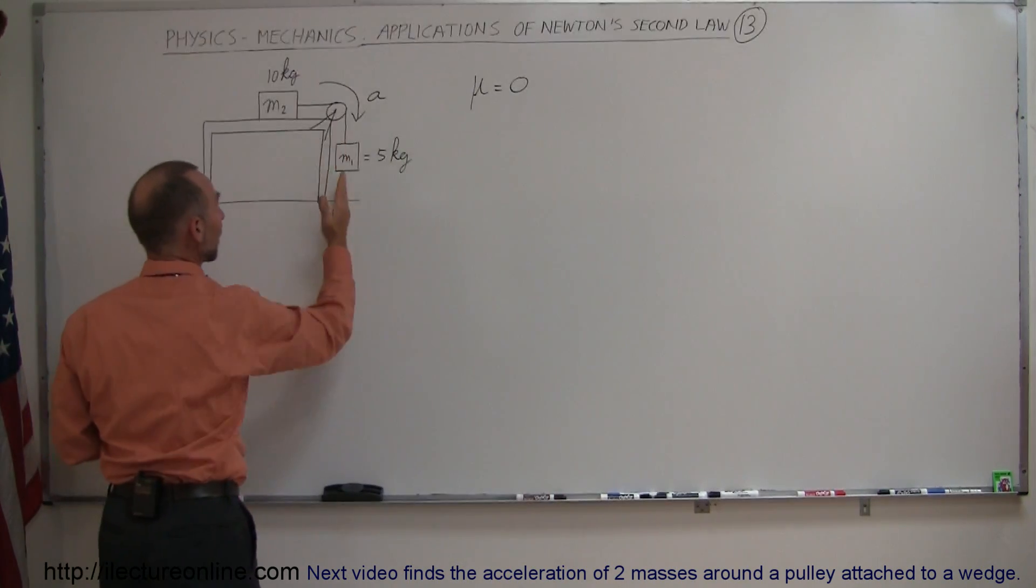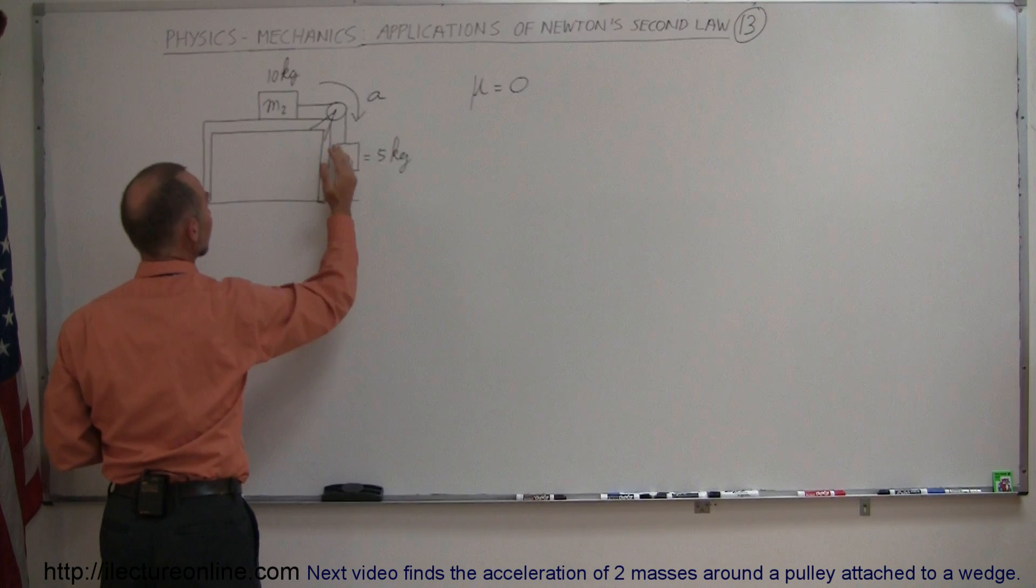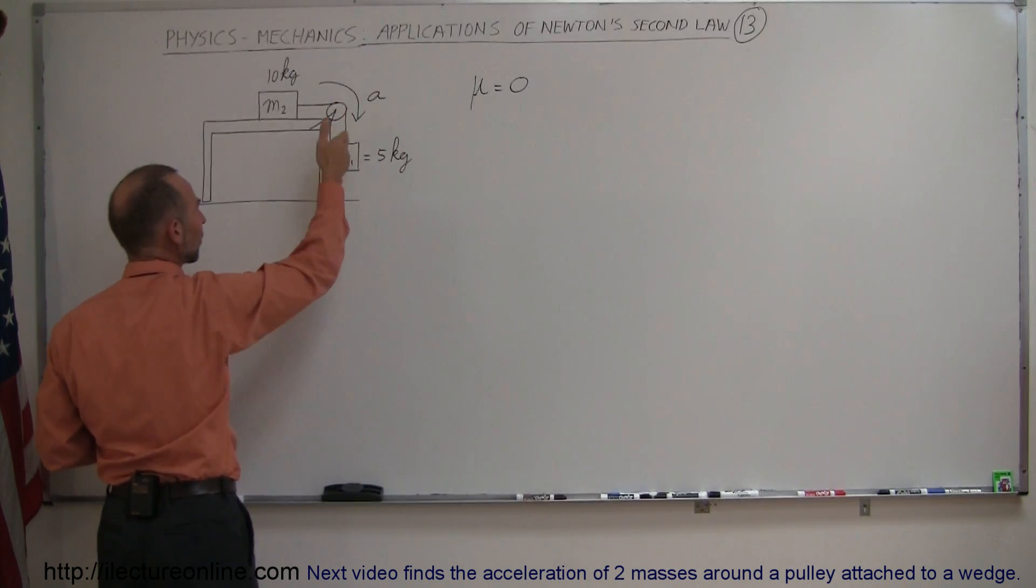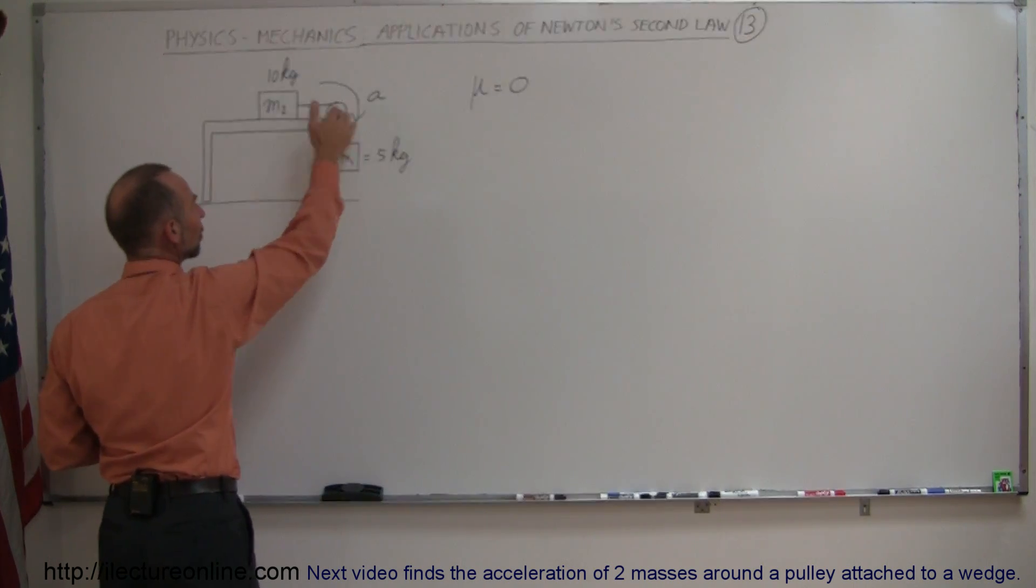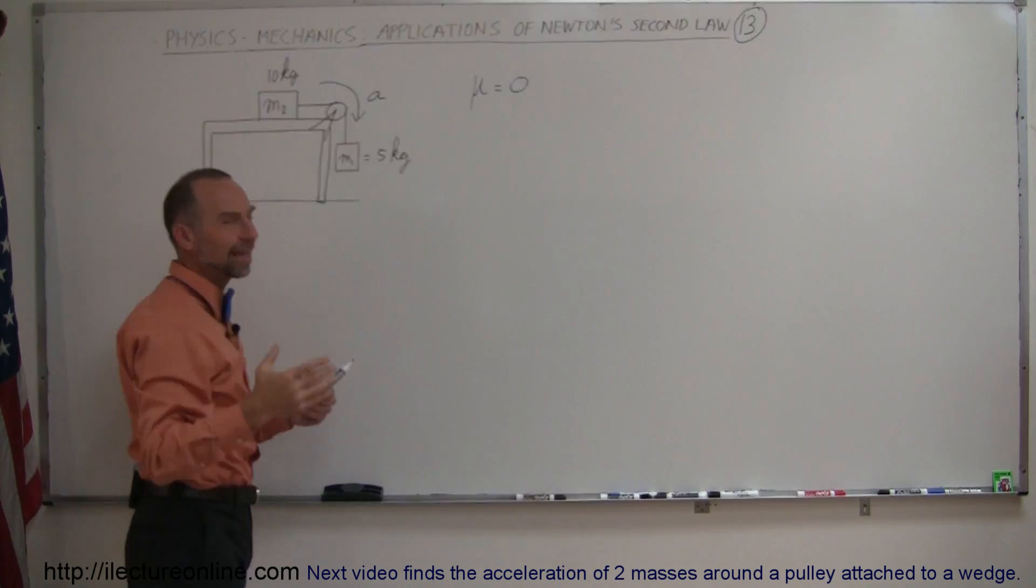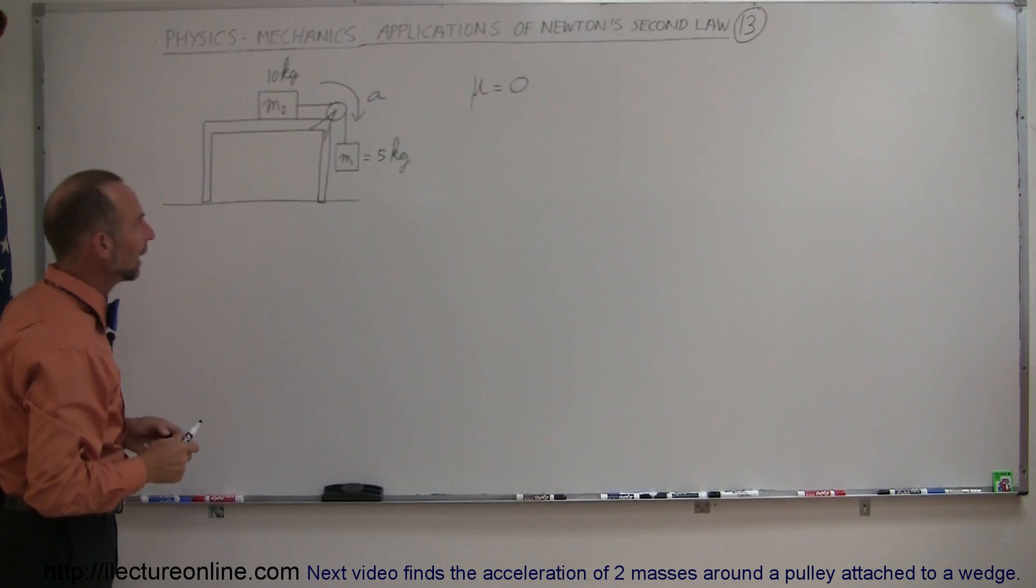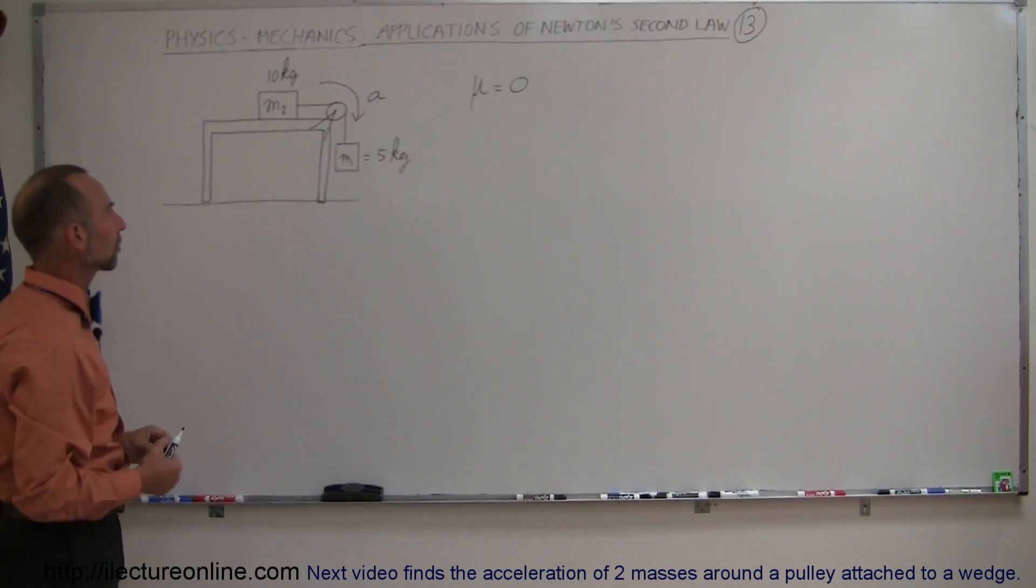Notice that this mass M1 will be moving in a vertical direction, M2 will be moving in a horizontal direction, but since they're attached to one another with a string across a pulley we consider that a continuous same direction problem, and so we can see that acceleration will be in that direction.